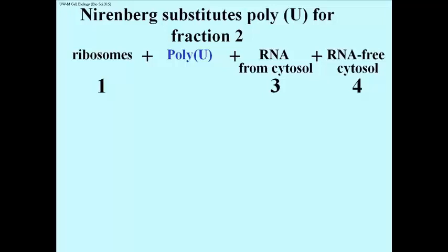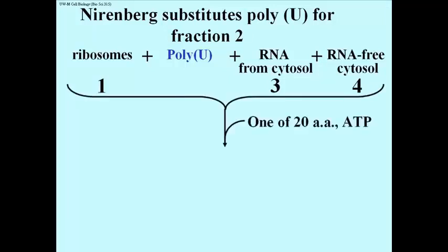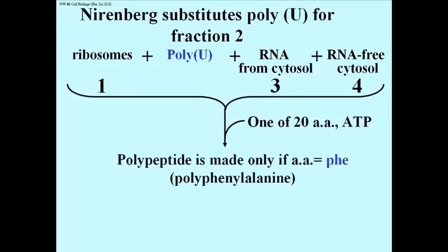So now he added back ribosomes, fraction 1, RNA from the cytosol, fraction 3, RNA-free cytosol, fraction 4, and poly-U. And one by one, in what amounts to 20 separate experiments, he threw in one of the amino acids and ATP. A polypeptide was indeed synthesized, but only when one amino acid was added, and that was phenylalanine.